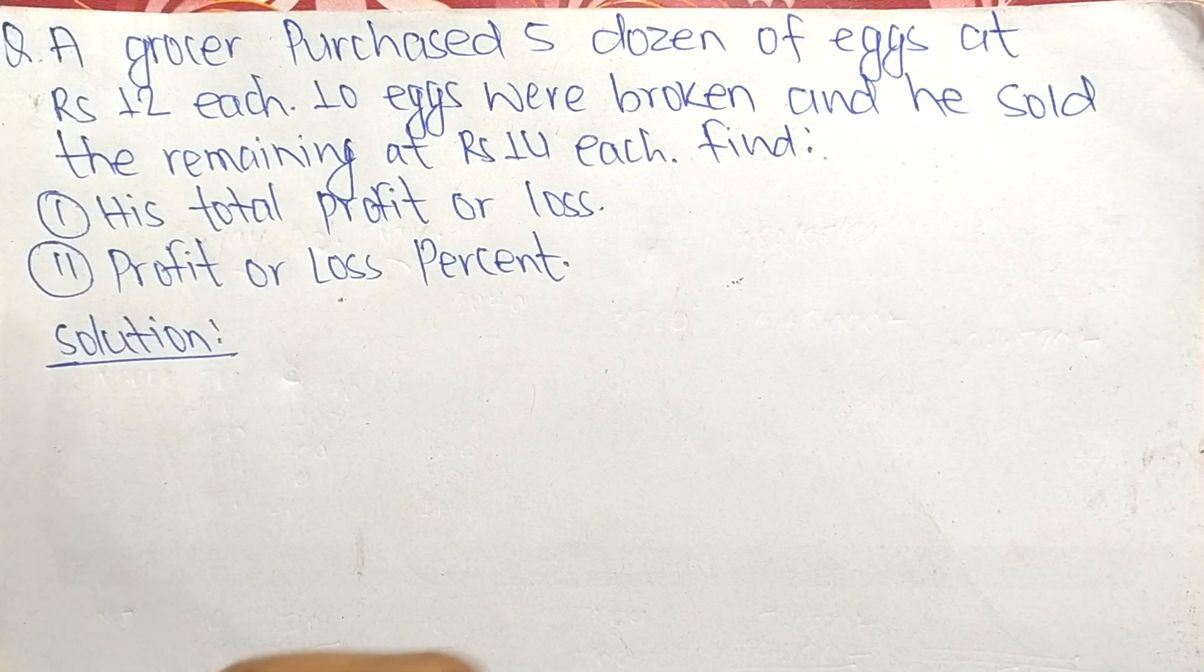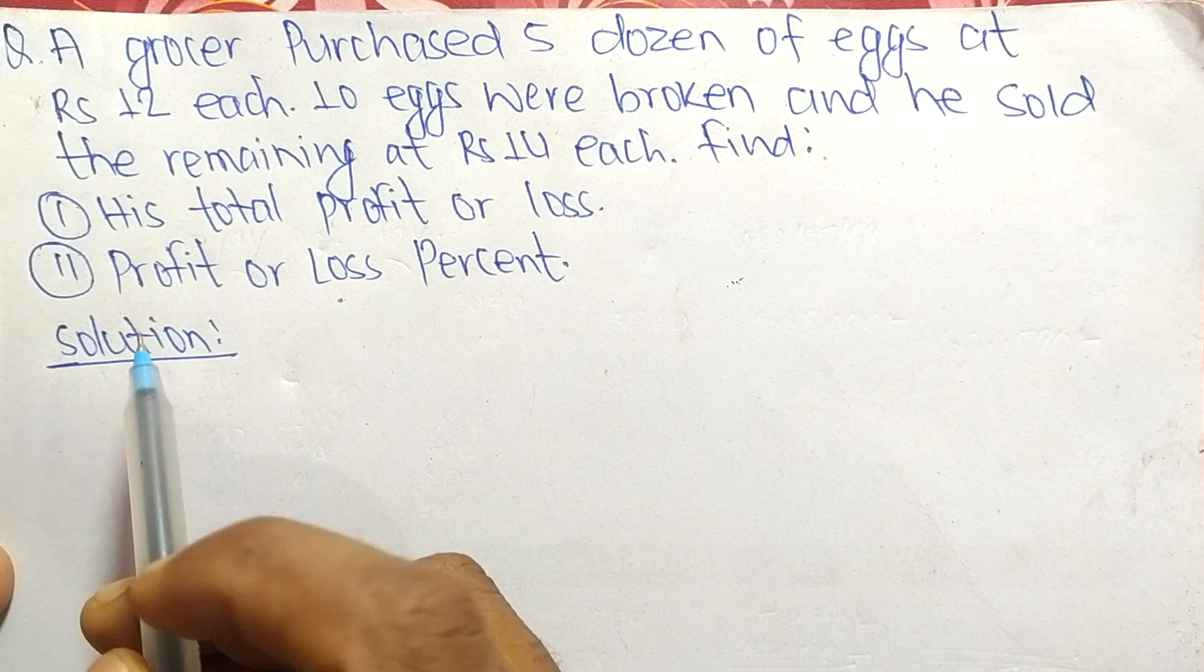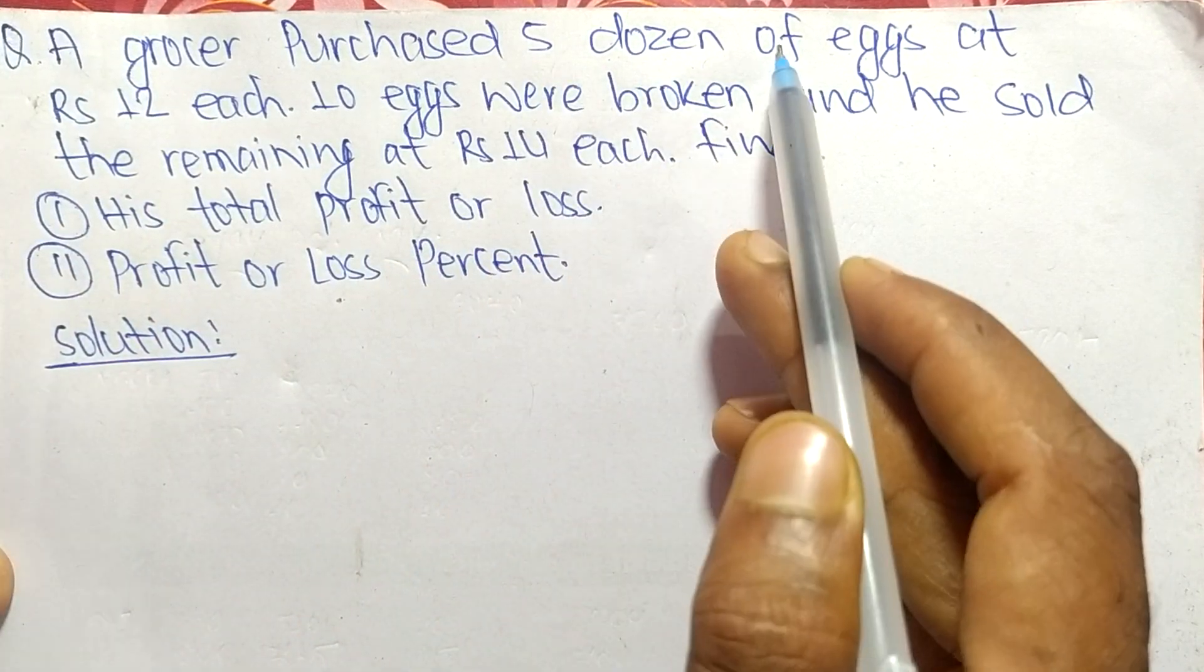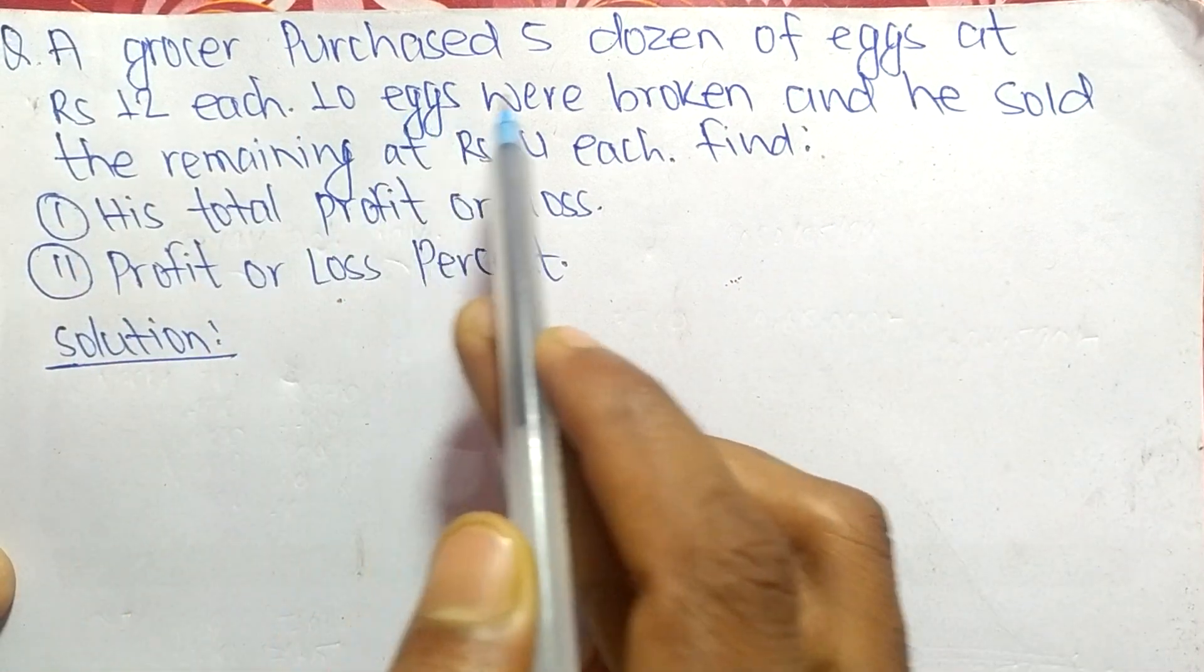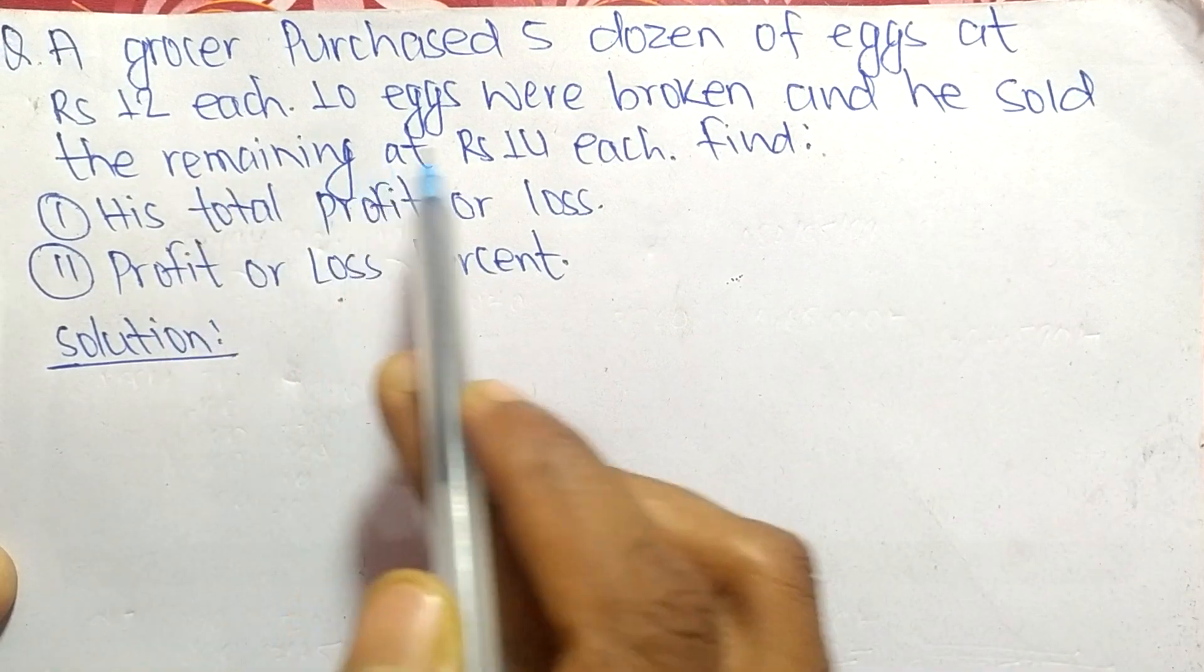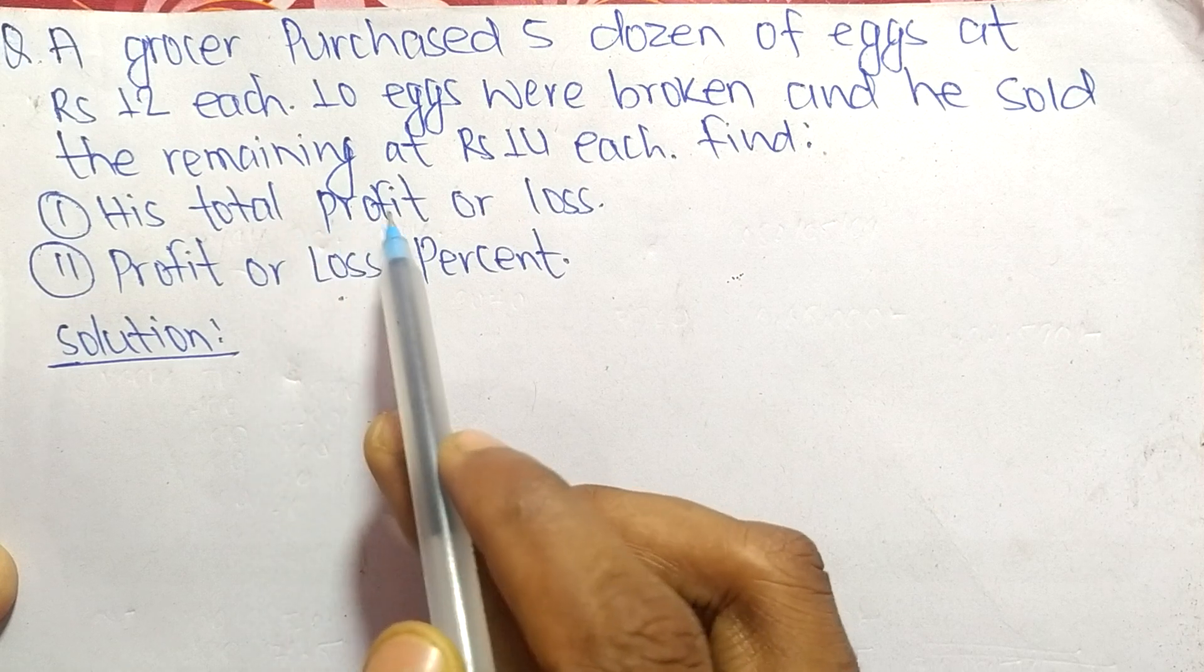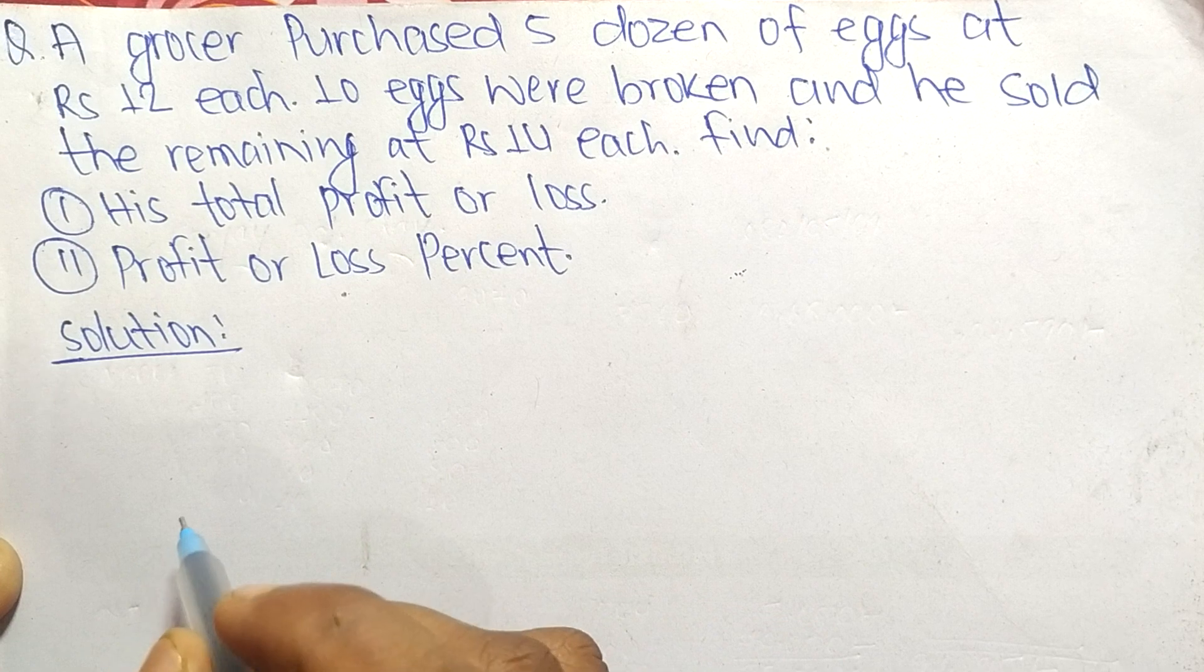Today in this video we are going to solve a profit and loss question. The question is: a grocer purchased 5 dozen eggs at Rs 12 each. 10 eggs were broken and he sold the remaining at Rs 14 each. We have to find profit or loss and profit or loss percent. First, write what is given here.